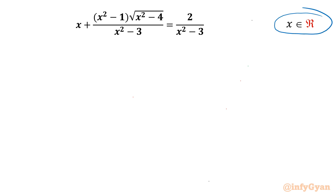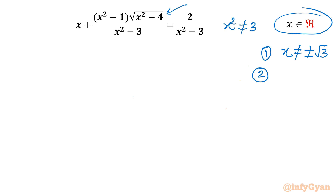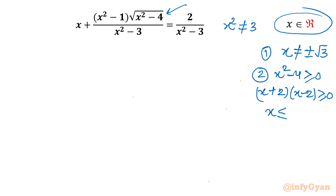Let's get started by writing the domain of the equation. The denominator cannot be 0, so x² cannot equal 3, meaning x cannot equal ±√3. From the radicand term, x² - 4 must be positive, so (x+2)(x-2) > 0. We conclude x ≤ -2 or x ≥ 2, meaning the solution must not lie between -2 and 2.